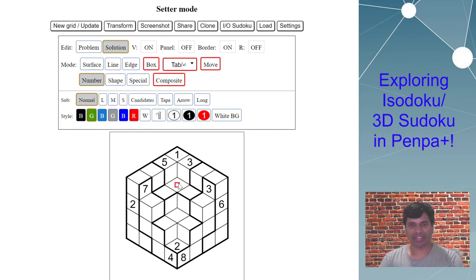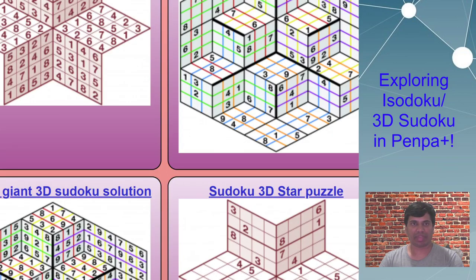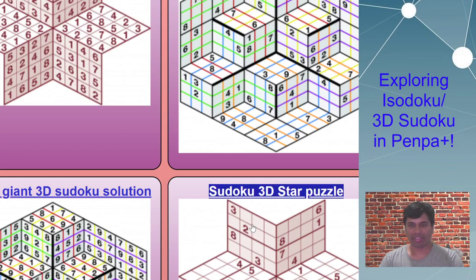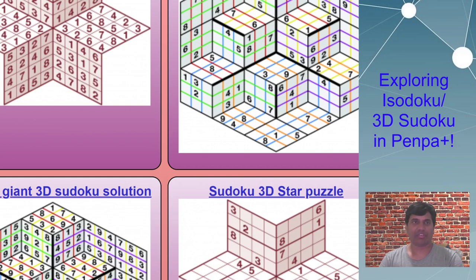So that's the complete process of creating a 3D sudoku or isodoku. There's also another kind — for example, on anypuzzle.com there's a sudoku 3D star shape which is eight rows by eight columns. You can create these kinds of puzzles on Penpa using the same free tool technique. Let me go back to Penpa and show another example.